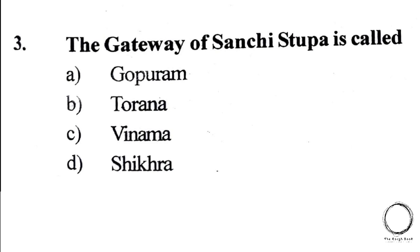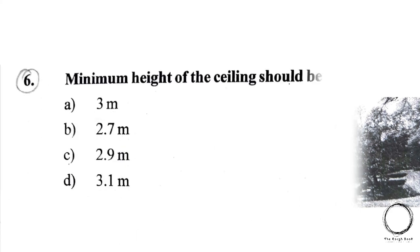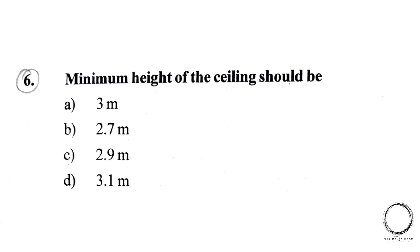Next question: The gateway of Sanchi Stupa is called — A) Gopuram, B) Torana, C) Vimana, D) Shikara. The answer is B) Torana. Next question: Identify the garden from the picture. The options are A) Shalimar Garden, B) Nishat Garden, C) Rock Garden, D) Inder Garden. The answer is C) Rock Garden.